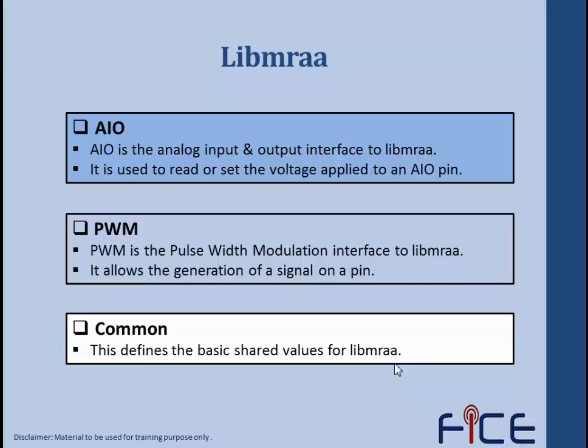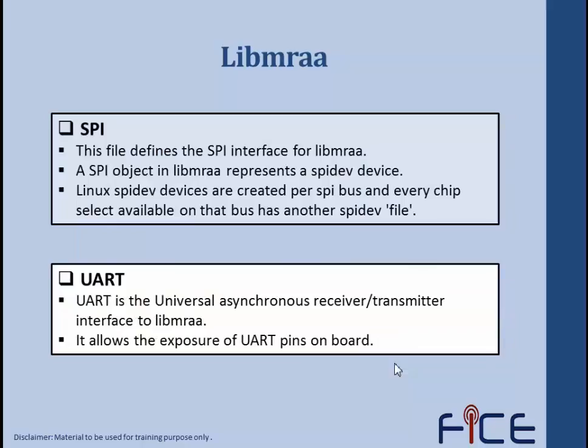SPI — this file defines the SPI interface to libmraa. Our SPI object in libmraa represents an SPI device. Linux SPI devices are created per SPI bus and every chip select available on that bus has another SPI device file. If we want to access the SPI module on libmraa, we have an SPI object known as SPI device. On our Galileo board, IO11, IO12, and IO13 act as MOSI (master out slave in), MISO (master in slave out), and SPI clock respectively.